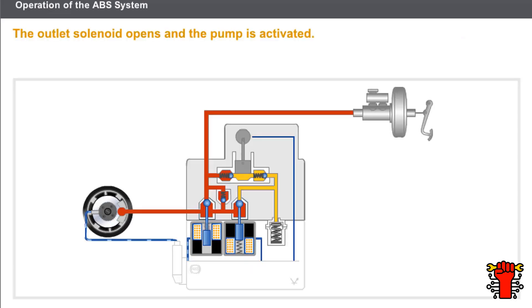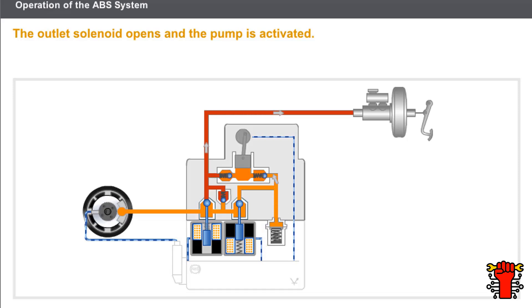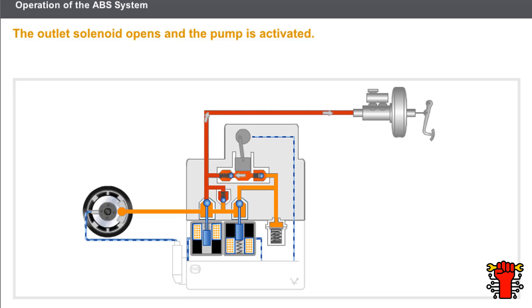Now let's look at the pressure reduction phase. If the wheel starts to lock, the computer reduces the pressure for the wheel concerned. The inlet solenoid remains closed, the outlet solenoid opens, and the pump is activated. The drop in pressure is instantaneous, thanks to the low pressure accumulator. The pump action allows the fluid stored inside the accumulator to flow back to the master cylinder outlet circuit, thus preventing the pedal from being depressed. The backflow causes the pulses felt on the pedal.